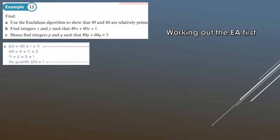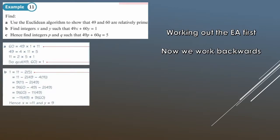We've got the Euclidean algorithm. All we need to do now is work backwards. Working backwards, we start with the first non-zero remainder, which is 1. So we've shown the numbers are relatively prime — co-prime. Now we work backwards: 1 equals 11 minus 2 lots of 5.